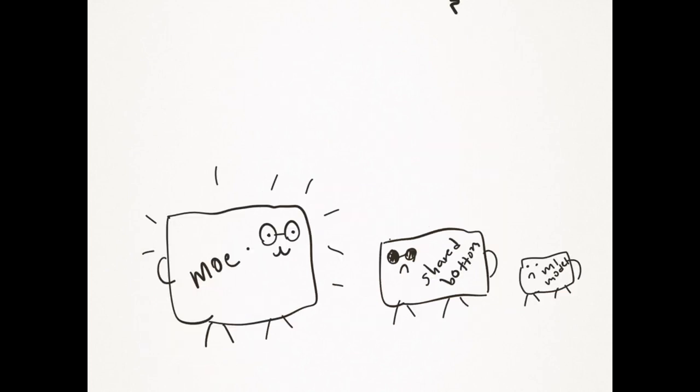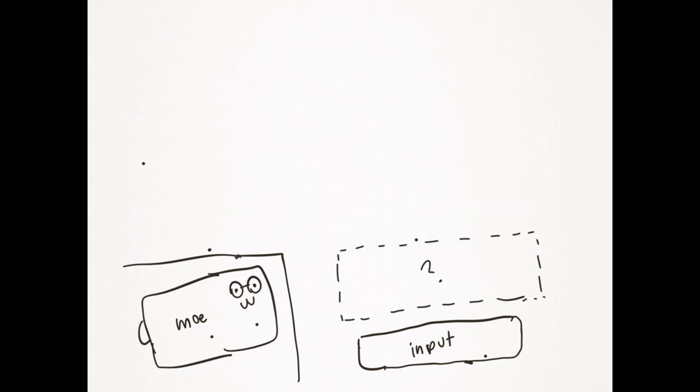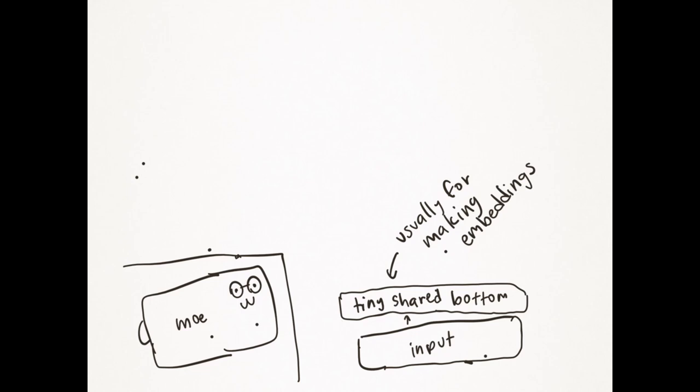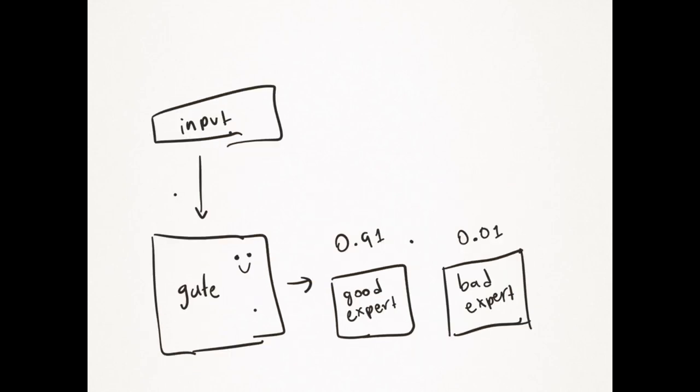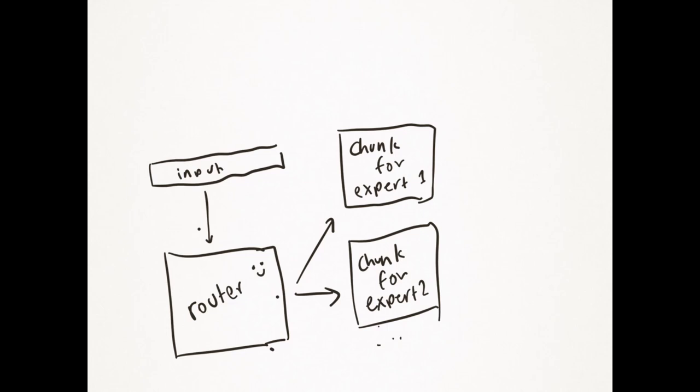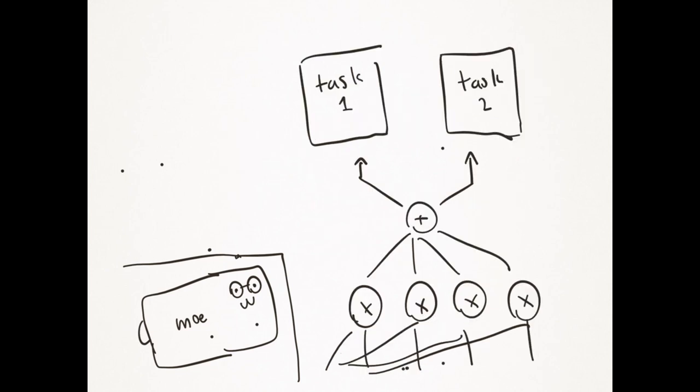MOE is an improvement of this. We pass our input in and give it directly to a bunch of expert models. Notice that there is no shared bottom layer, or if there is, it isn't as big as the multitask networks. We also pass our input to a gate network which tries to figure out which expert should do which task. Sometimes people include a router network which figures out what parts of the input go to each expert, and this is often used as the gate network, though I won't mention that here.